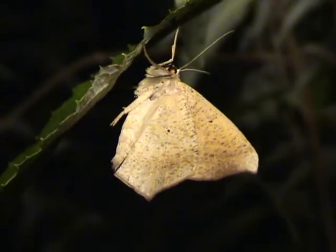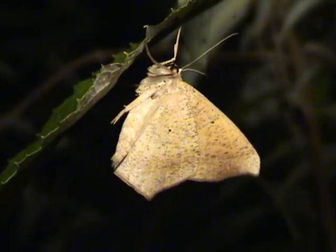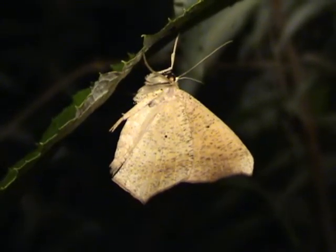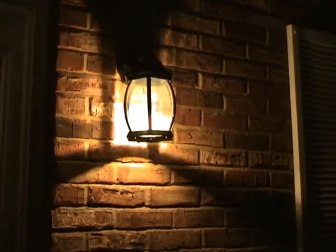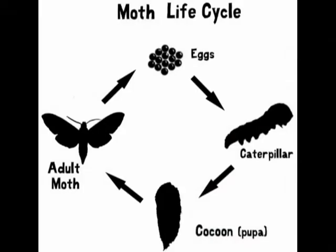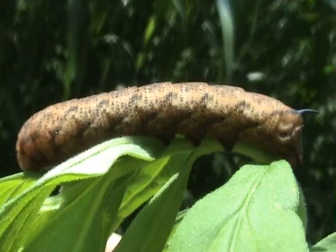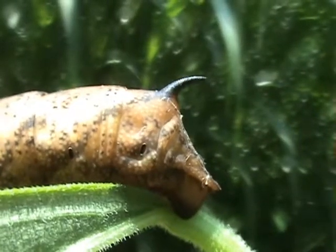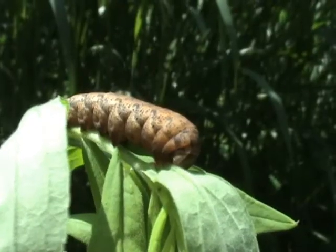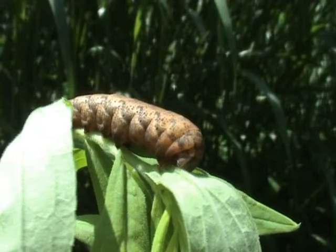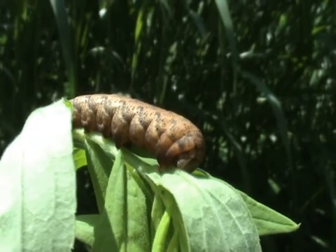Moths are the nocturnal twin to butterflies. Usually coming out at night or at dusk, they are most often seen flying around lights. The life cycle of a moth is pretty much the same as a butterfly, going from egg to caterpillar to pupa to adult. This moth larvae is called a hornworm because of the horn it bears. Often seen on tomato plants, these are actually caterpillars and not related to worms at all.